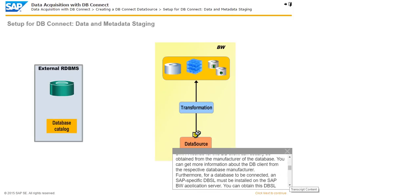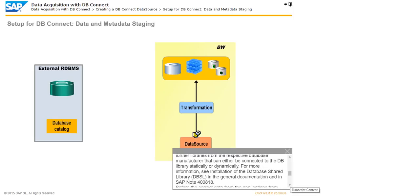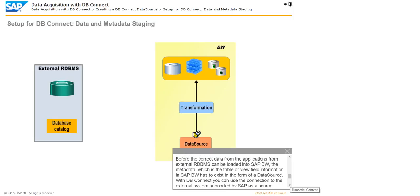A license for this dbclient can usually be obtained from the manufacturer of the database. Furthermore, for a database to be connected, an SAP-specific dbSL must be installed on the SAP BW application server. You can obtain this dbSL from SAP. The data-dependent part of the database interface is located in its own library and is dynamically connected to the SAP kernel. In addition to the dbSL, the library also contains further libraries from the respective database manufacturer that can be connected to the database library either statically or dynamically. For more information, see the installation of the database shared library (dbSL) in the general documentation and SAP Note 400818.